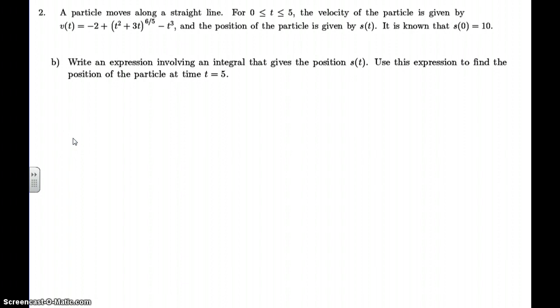Okay, part B. Our job here is to write an expression that involves an integral that gives the position S of t. So position is a function of time. And then we're going to use this expression to actually find the position of the particle when t is equal to 5. All right. As we showed earlier, position is going to be the integral. Actually, the change in position is the integral. So that means S of t is going to equal S of 0 plus your integral velocity function with respect to time from 0 to t. So there's our integral.